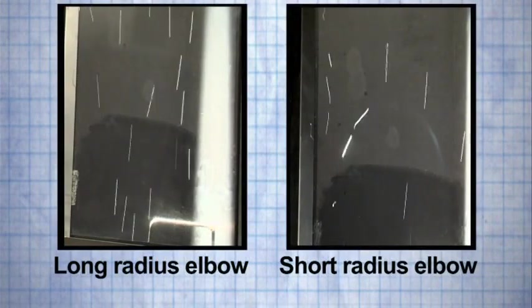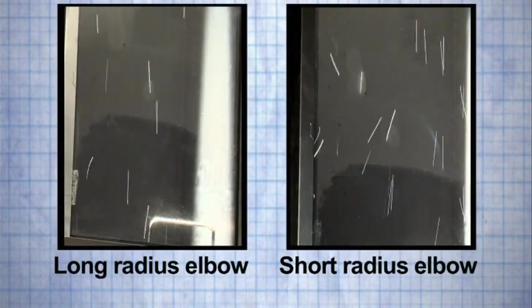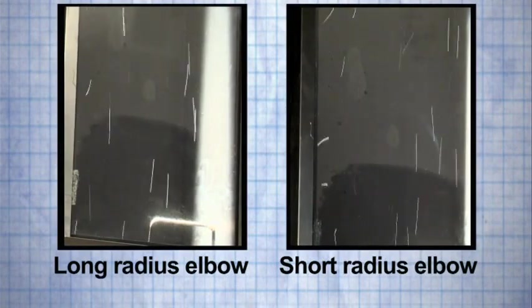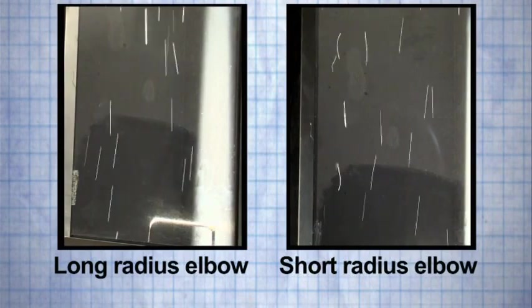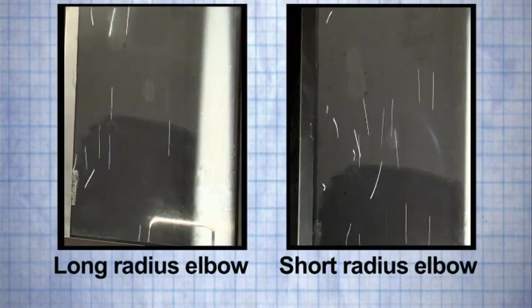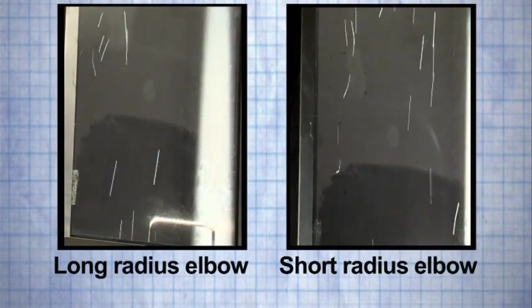Typically, the longer the turning radius, the lower the pressure loss. The trade-off is that the cost to construct increases as the elbow's radius increases and more space is required as the fitting's radius increases.